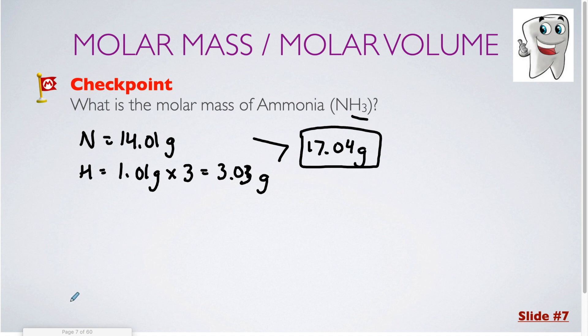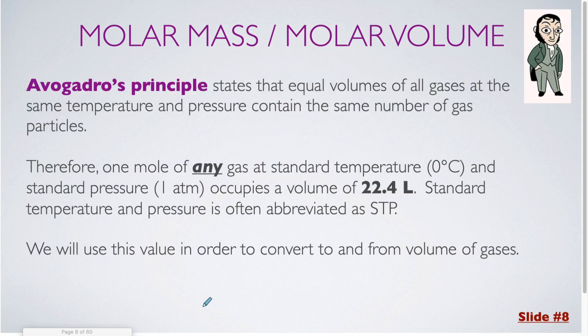These molar masses will eventually be needed in order to do conversions between grams and moles. Now for determining the molar volume. Avogadro's principle states that equal volumes of all gases at the same temperature and pressure contain the same number of gas particles. We've covered this earlier in the year. That's Avogadro's number, 6.022 times 10 to the 23rd.